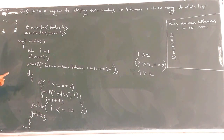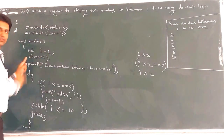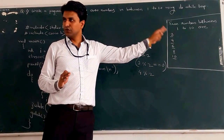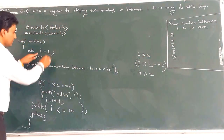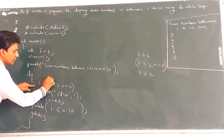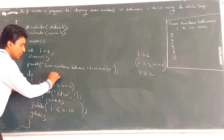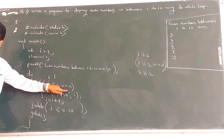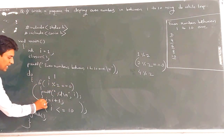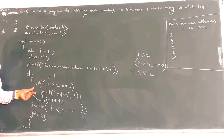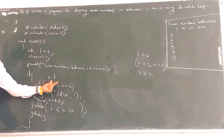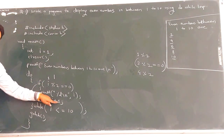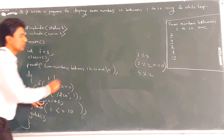Let's trace the execution flow. Initial value of i is 1. We check: 1 mod 2 gives 1, so 1 == 0 is false — condition is false. The body of if does not execute. Next, i++ makes i equal to 2. Then the while condition: 2 <= 10 is true, so the loop continues.